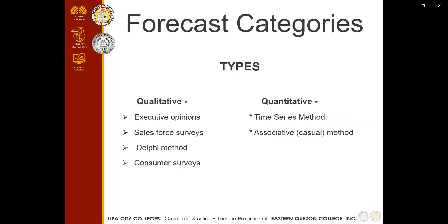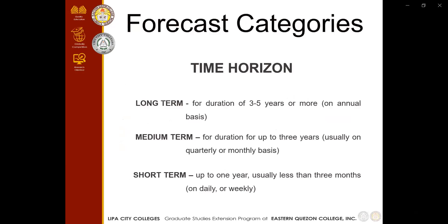These are the forecast categories. We have two types: qualitative and quantitative. Under qualitative, we have executive opinion, salesforce survey, the Delphi method, and consumer survey. For quantitative, we have the time series method and the associative causal method.